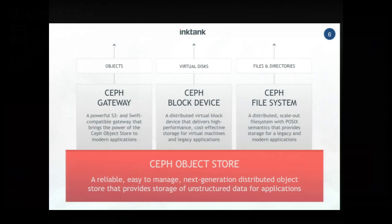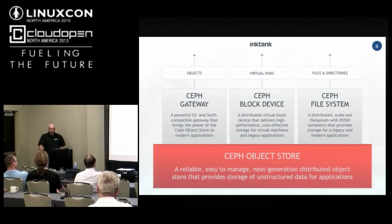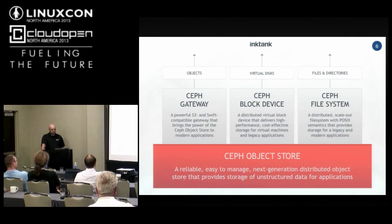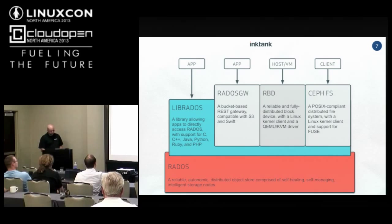This is the architecture diagram that explains how Ceph all fits together. Underneath it all, it's an object store — we get cool things for free by doing an object store underneath, without worrying about file hierarchies. On top of the object store, we expose it via three different interfaces: the RESTful APIs — S3 and OpenStack Swift gateway — the virtual disk which is our block device RBD, and CephFS which is the POSIX-compliant scale-out file system. For developer-centric folks, there's also a low-level library interface if you want to roll your own.